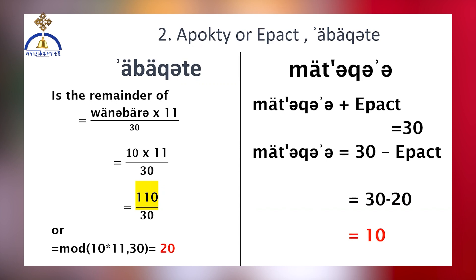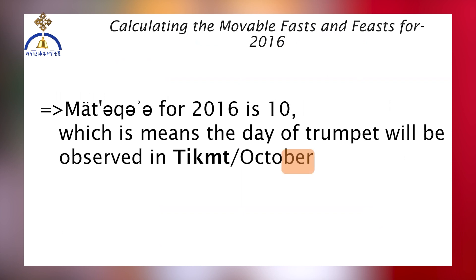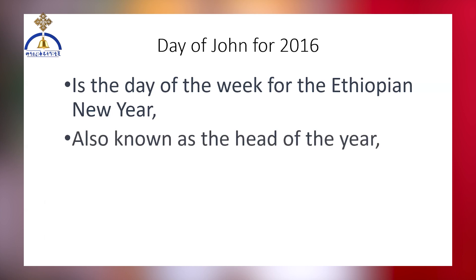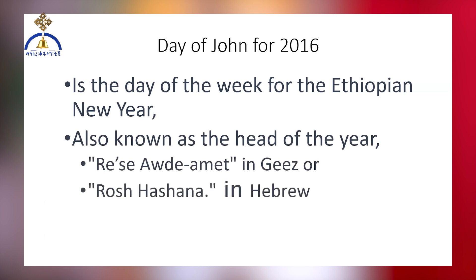By obtaining the Wembar, Epact, and MEDC values for a specific year, we can accurately determine the starting days of the movable fasts and feasts. The calculated MEDC value of 10 indicates that the Day of Trumpet will be observed in Tegumt, corresponding to the Gregorian month of October to November. Continuing our endeavor, our focus now shifts to finding the day of the week for the Ethiopian New Year, also known as Head of the Year.